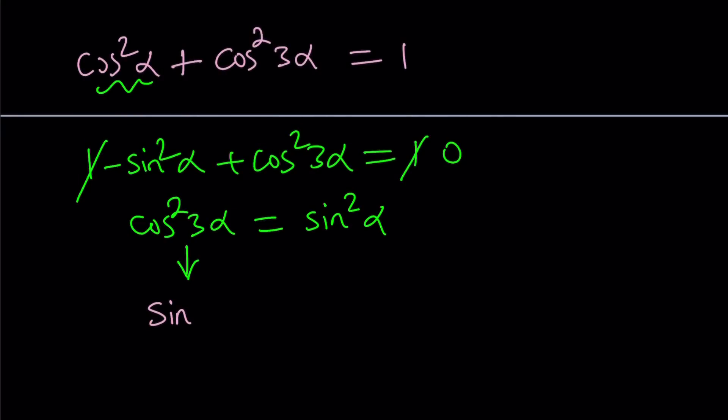so I'm going to do the following. Let me do it first and then I will replace here. So basically cosine of 3 alpha can be written as sine of pi over 2 minus 3 alpha.